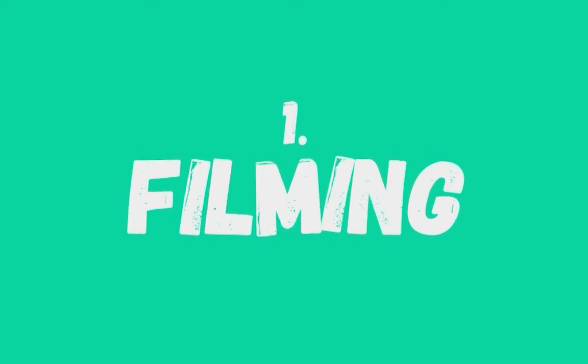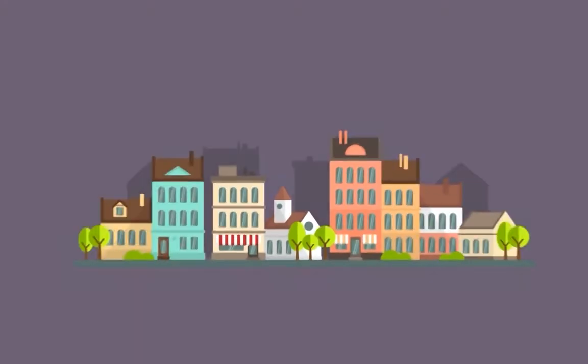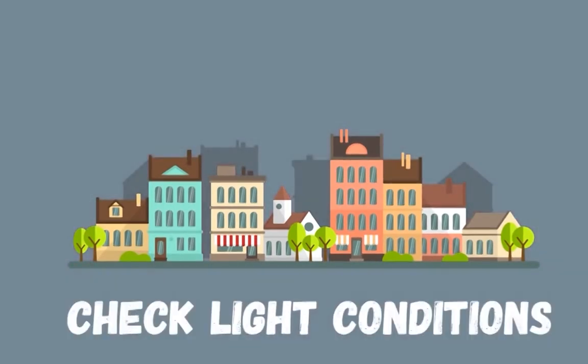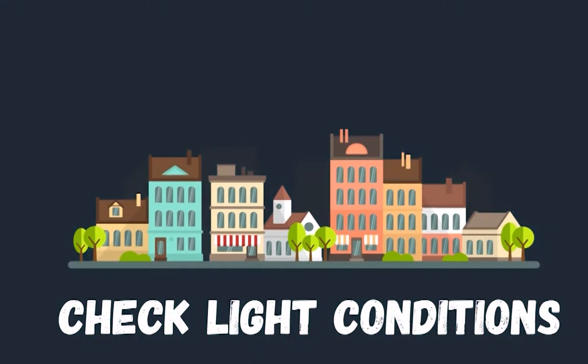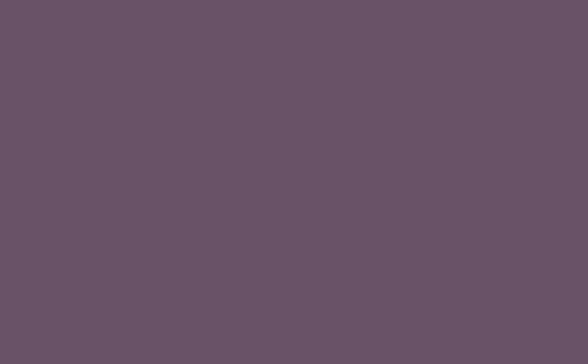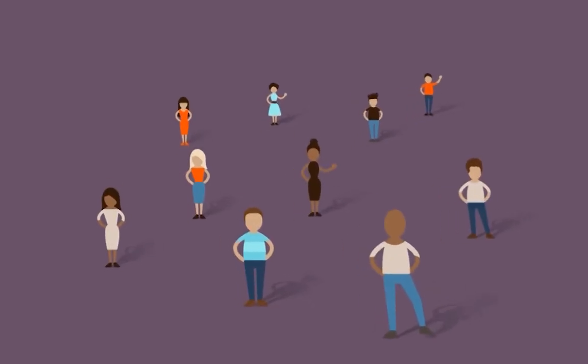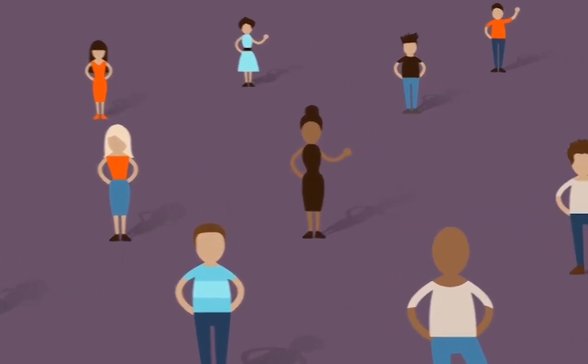While filming, it is very important to have a stable tripod — the clips should be as fixed as possible. Similarly, it is good to check that the lights and conditions do not change suddenly. Finally, the actors have to perform movements that are well defined and as isolated as possible from the rest of the body.